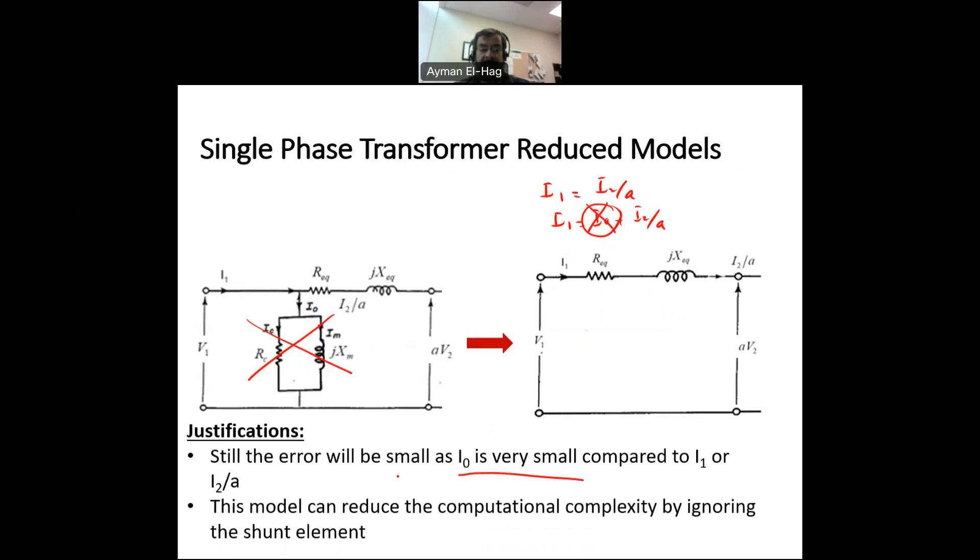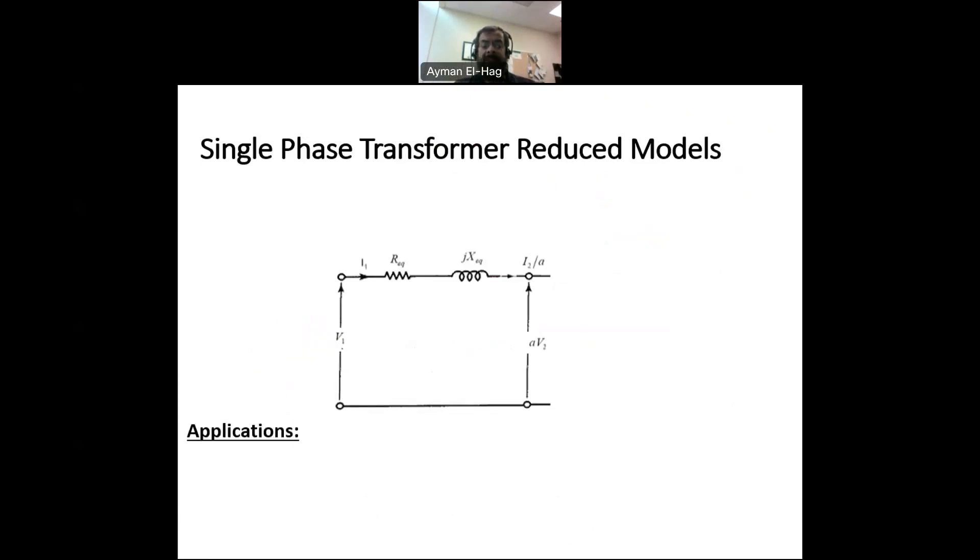And now, this model can reduce significantly the computational complexity of the previous model when we ignore the shunt element. So you are gaining a lot. By little bit sacrificing in the accuracy, you are gaining a lot in terms of the computational complexity in your system. Now, what is the application of this model? We use this model now whenever we deal with many transformers in the power system, but we need to consider the losses in the winding of the transformer. So sometimes when you do what we call load flow analysis, the losses are very important to us. So we might want to consider also the losses from the transformers. So we need to keep the resistance of the transformer.